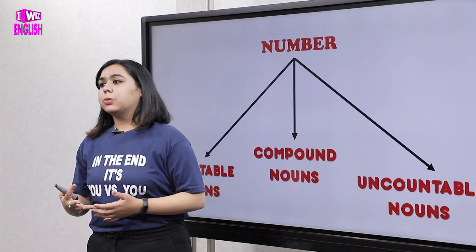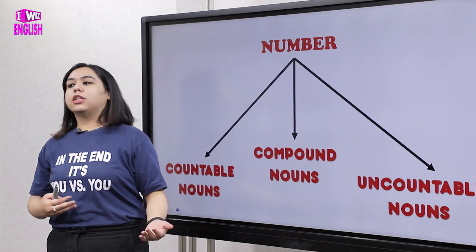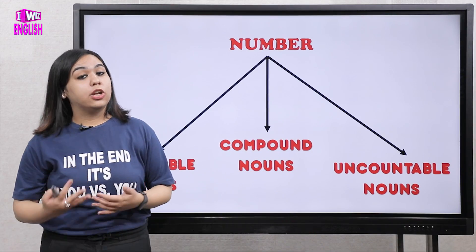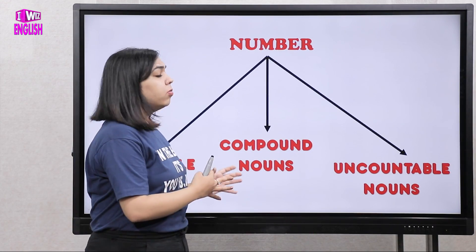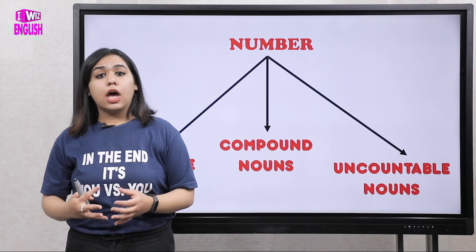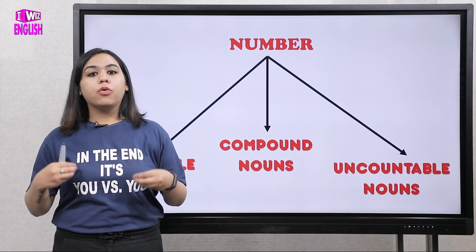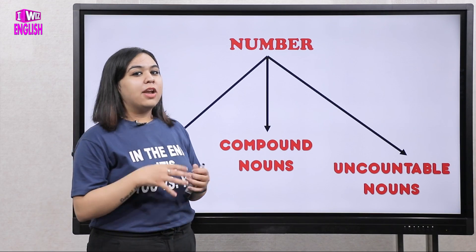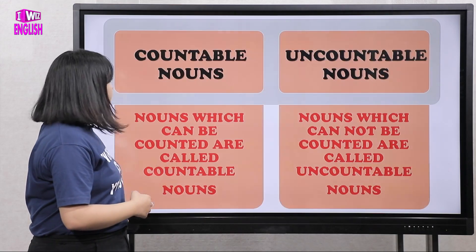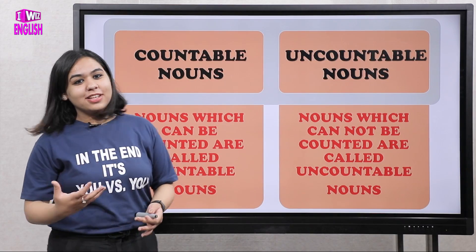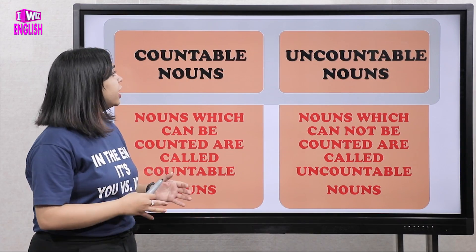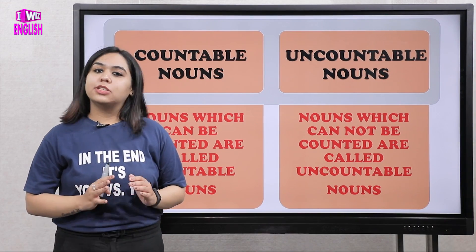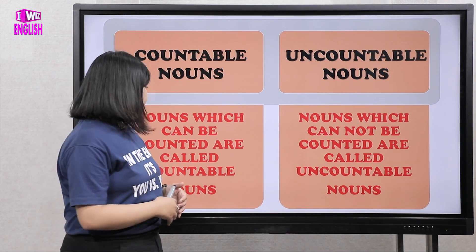As the name suggests, countable is something that can be counted, uncountable is something that cannot be counted, and compound means a noun made up of two or more words. We'll be discussing them one by one. Differentiating between countable and uncountable nouns is very important, so listen carefully.